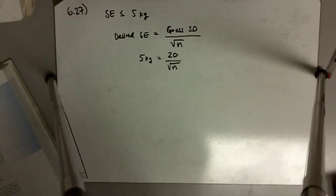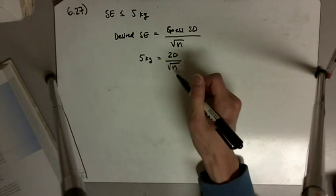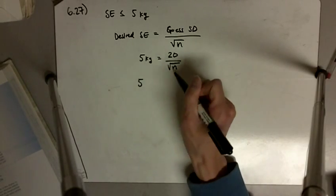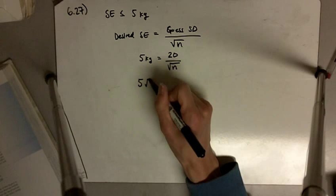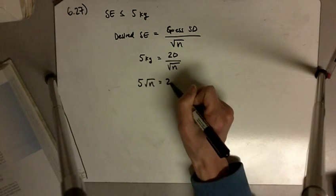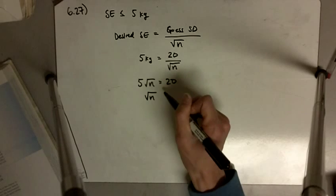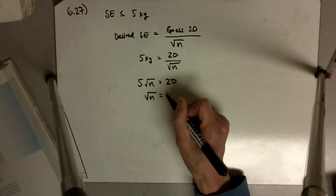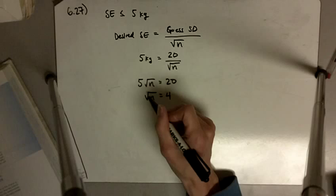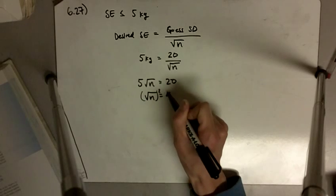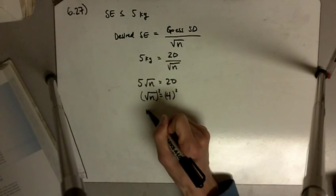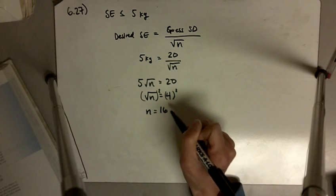And so solving for this, we get 5, multiply both sides by the square root of n, we get 5 square root of n is equal to 20. We get the square root of n, divide both sides by 5, we get 20 divided by 5 is 4. We square both sides and we get n is equal to 16.